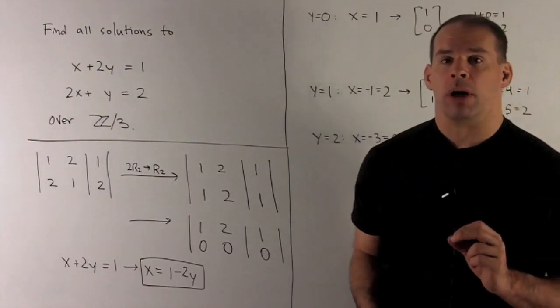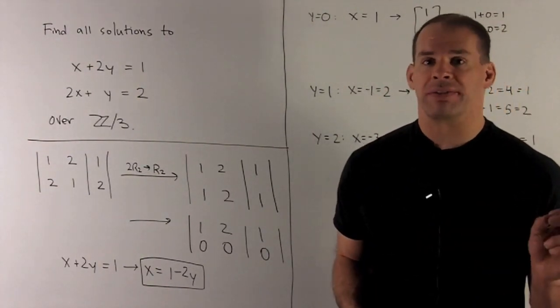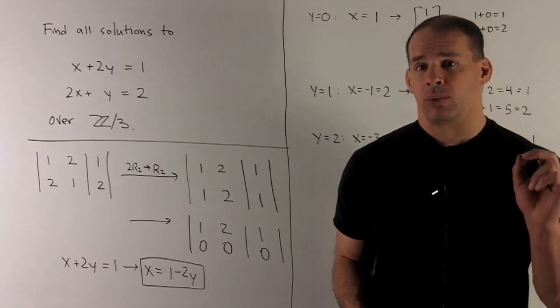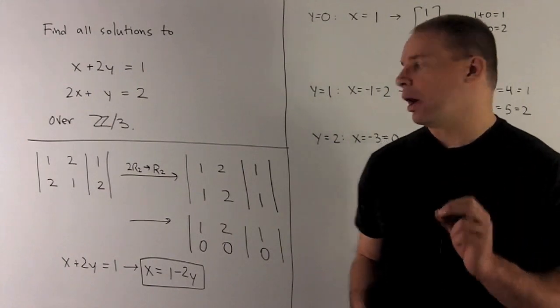We know that's going to be a multiple of the first row. It actually is the first row. So I can row reduce that out, and I'm just going to be left with the row 1, 2, 1.